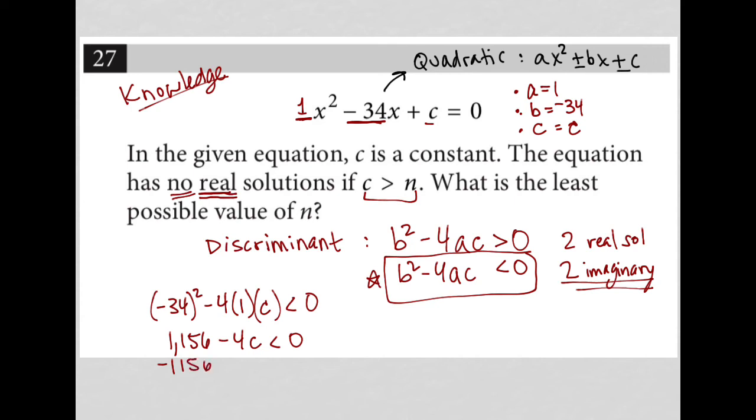I'm going to subtract 1156 from both sides. So that's gone there. I'm going to move over here to have more space. So I'm left with -4c is less than -1156. Divide both sides by -4. Go to my calculator again. Divide by 4.